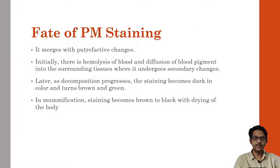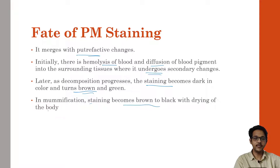Fate of post-mortem staining: mainly after 8 to 12 hours, as putrefaction starts, bacteria begins growing and it merges with the putrefactive changes. Initially there is hemolysis of blood and diffusion of blood pigments into the surrounding tissue, where it undergoes secondary changes. Later, as the decomposition process proceeds, the staining becomes dark in color and turns brown and green. In mummification, staining becomes brown and black with drying of the body. So mainly as the late changes start — putrefaction, mummification, adipocere formation — it merges with the decomposition, and as the blood decomposes, the color changes from brown to green.